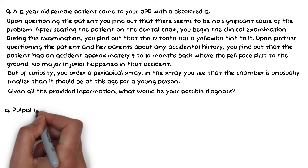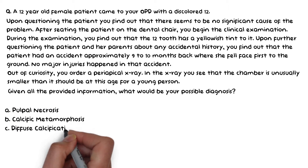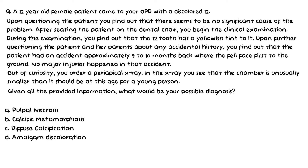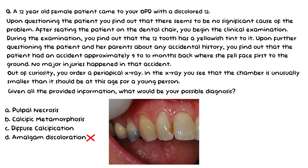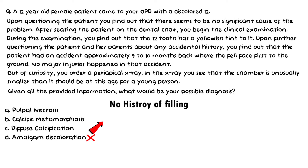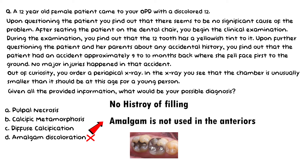The options are: A) pulpal necrosis, B) calcific metamorphosis, C) diffuse calcification, or D) amalgam discoloration. Let's start by disregarding the most obvious wrong answer — amalgam discoloration. Firstly, there is no information provided about a history of amalgam filling. Secondly, amalgam is never used in anterior teeth because of inferior aesthetics and issues with mechanical retention. So option D is automatically incorrect.